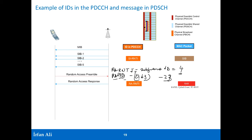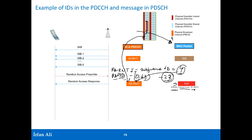In the downlink, the random access response is sent. The identity in the PDCCH is the RA-RNTI — here the value is 4 — which points to a location in the PDSCH containing the random access response. That response includes the RAPID value (23 in our example), an uplink grant indicating when the mobile should transmit (for example, four or five subframes later and in which resource block), and also a temporary C-RNTI — the temporary cell radio network temporary identity — which becomes the UE's radio-level identity once random access completes.